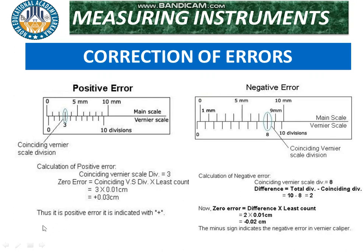This is the positive error, indicated with a positive sign. The negative error is a little bit different — if the zero lies on the left side, we add the negative error to correct the reading.